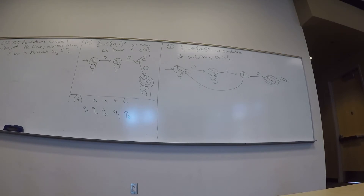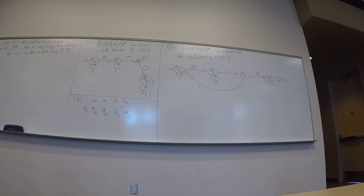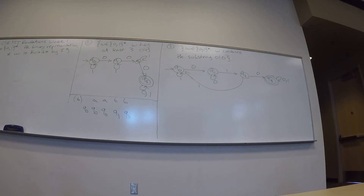Let's think about any string in {0,1}*. If I divide by 5, what are the possible remainders? It could be 0, 1, 2, 3, or 4 — a remainder of 5 would be equivalent to 0. So the remainders can only be 0, 1, 2, 3, 4. Is that a finite number? Yes — it's 5. So the strategy is to model each remainder as a state.